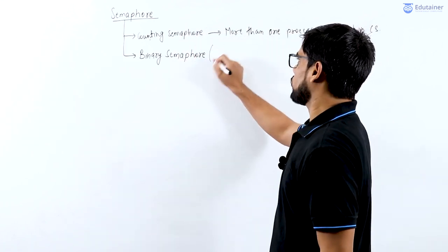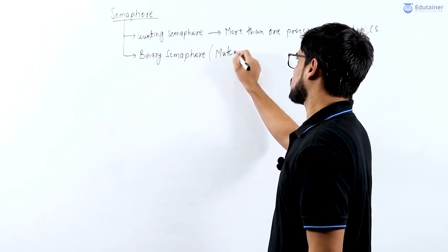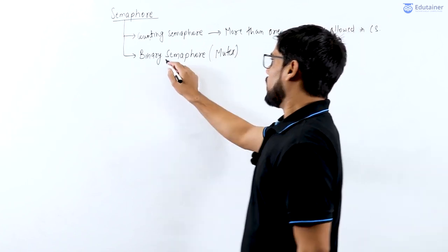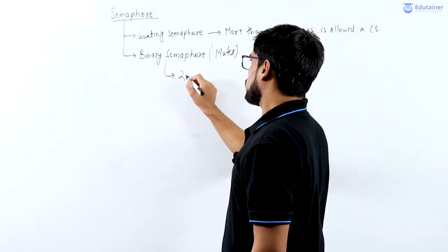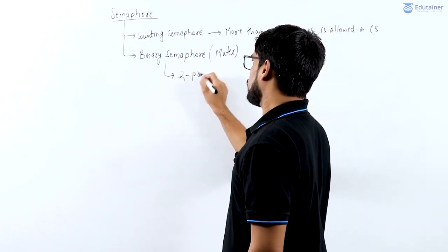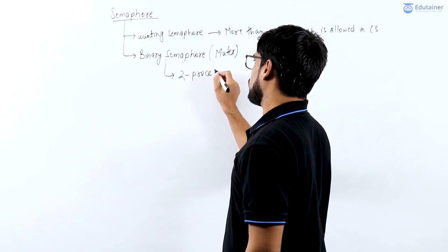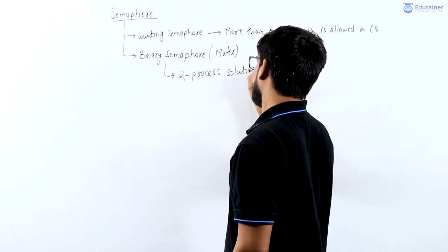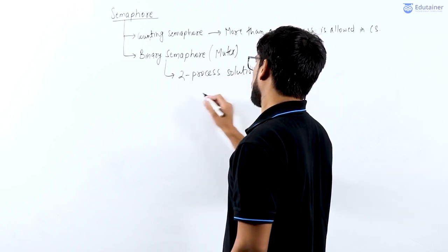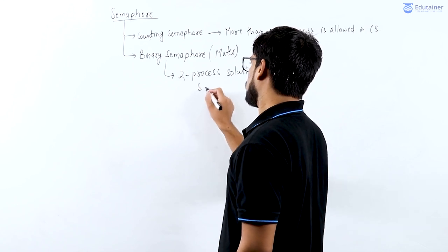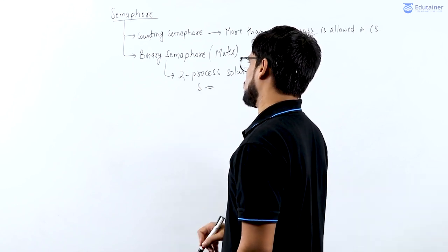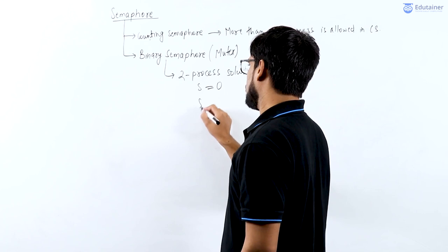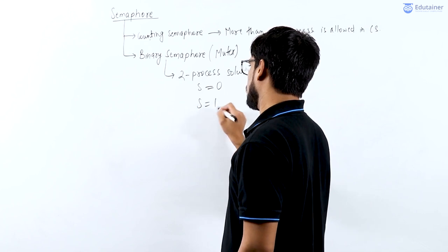Binary semaphore is also called mutex. In binary semaphore, it is also called a two-process solution. So binary semaphore is a two-process solution in which we use two values of the semaphore variable s — one is 0 and the other is 1.